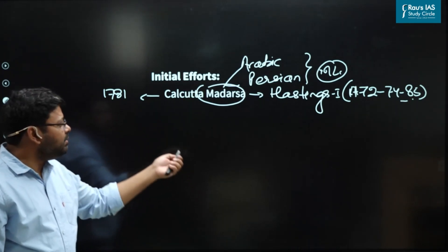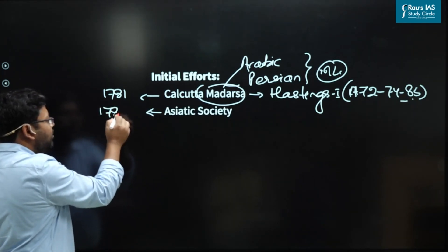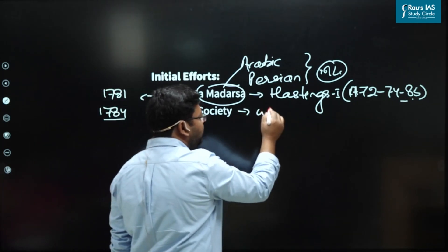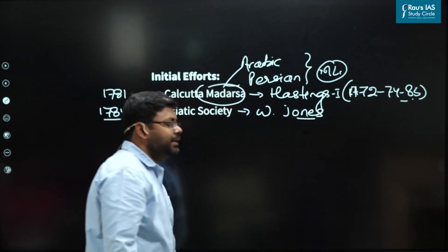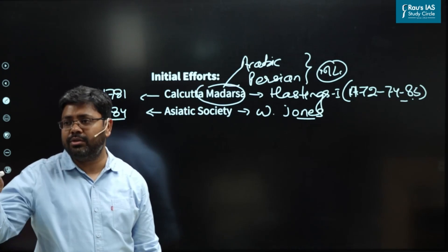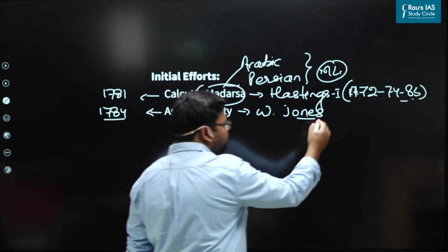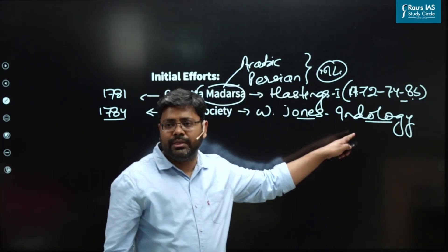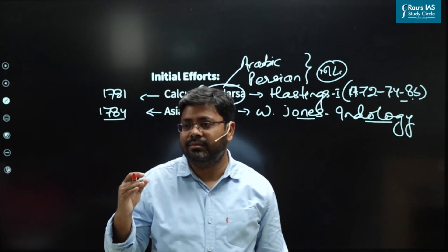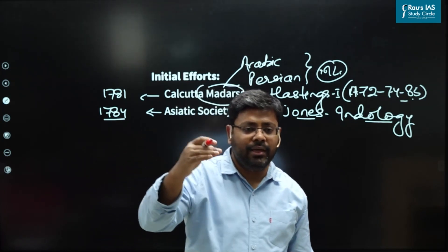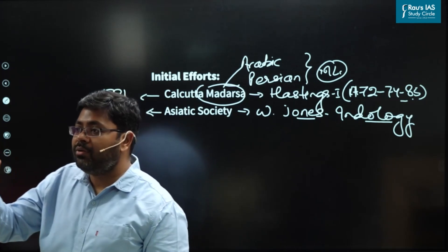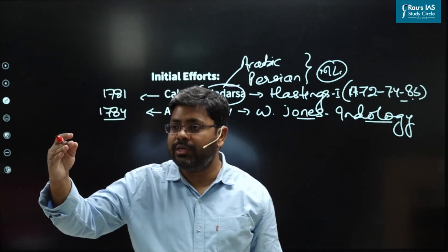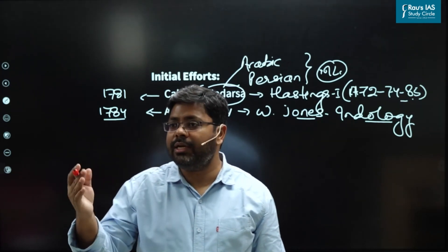The next big thing was 1784, when the Asiatic Society was established by William Jones. The Asiatic Society was a most remarkable institution of that time because it was for Indological study — the study of South Asian history, culture, language and literature. The British were rulers and the rulers must know about the subjects. That is why they promoted Indological study. The Asiatic Society, established in 1784 by William Jones, was one of the biggest societies of that time for Indological studies.